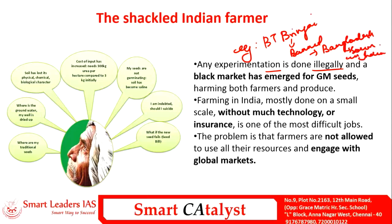Fragmentation of land and subsistence agriculture has led to farming being conducted without much technology or insurance, making agriculture one of the most difficult jobs in India. Post-1991 reforms have made India one market for global goods, but all the structural problems discussed have not allowed farmers to use their resources judiciously to engage with global markets effectively. The government should embark on long-term policy planning to address the woes of Indian farmers, because the prosperity of primary economic activity is the base for a country's economic growth and development.